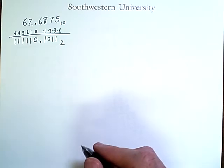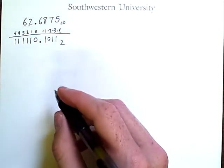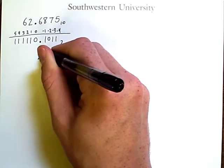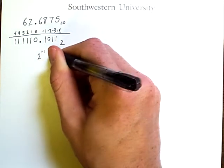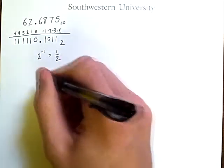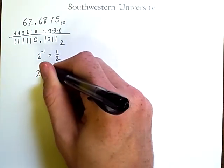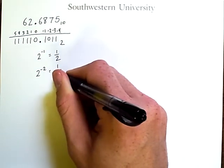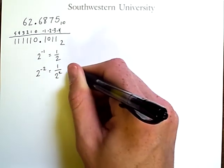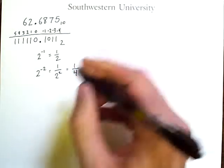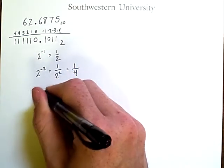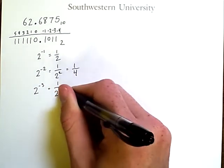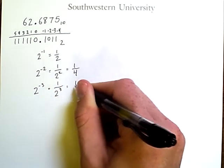So now you need to recall what it means to have a negative exponent. 2 raised to the negative 1 is simply equal to 1 half. 2 raised to the negative 2 is equal to 1 over 2 to the 2, which is equal to 1 fourth. Similarly, 2 to the negative 3 is 1 over 2 to the 3, or 1 eighth.